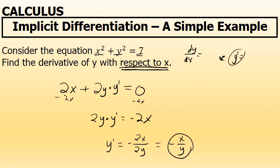For the equation x squared plus y squared equals 7, the derivative of y with respect to x is negative x over y.